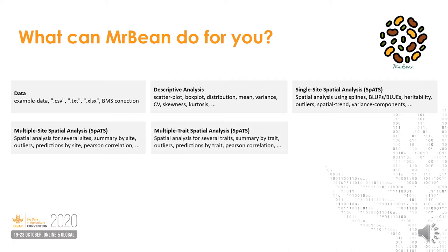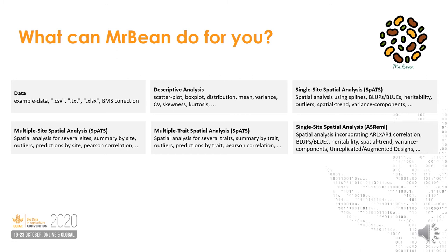Also, if you have more than one trait, you can run multiple traits. Then you can jump to another approach using ASRML, which incorporates autoregressive correlation. For ASRML, we have a model selector — it's a little bit complicated to fit the best model by yourself, so you can use the model selector.